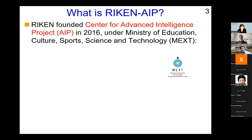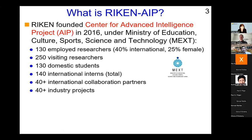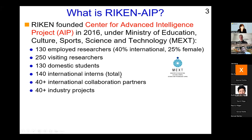Riken AIP — the Center for Advanced Intelligence Project — was founded in 2016 under Japan's Ministry of Education, Culture, Sports, Science and Technology. It's a national project center. We have about 130 employed researchers, about 40% are international, and about one quarter are female. We have about 250 visiting researchers from universities and industries, and about 130 domestic students. We also invited many international interns before COVID, accepting 140 students total. We stopped the internship program for a couple of years, but this year we resumed it.